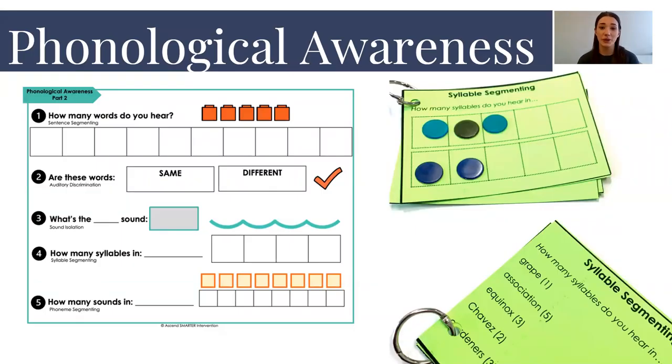When we talk about phonological awareness from a writing lens, we are addressing things like segmenting as well as sound isolation and auditory discrimination. For the purpose of today's video I'm going to use the CK phonogram as an example. So for a CK based lesson we might use the sentence segmenting prompt and ask them how many words do you hear in this sentence? The truck got stuck in the mud and they need to identify how many words were in that sentence.